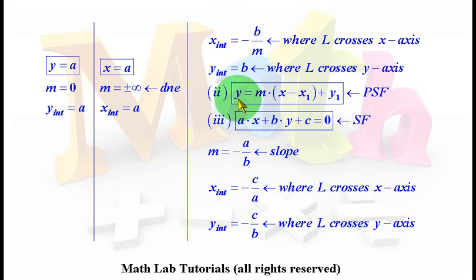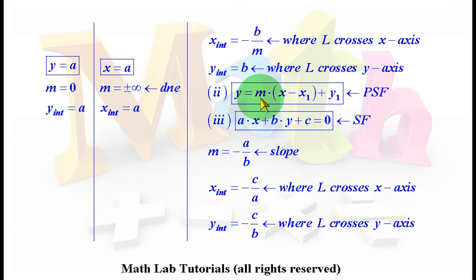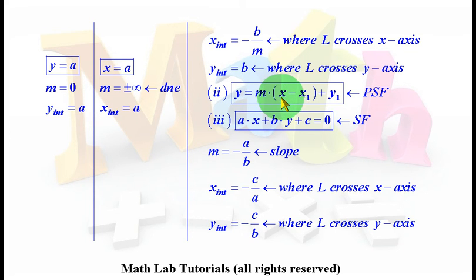There's another form for the equation of a line called point-slope form. It reads: y equals m times bracket (x minus x1) plus y1. Here m is the slope (y2 minus y1 over x2 minus x1), and the point x1, y1 is any point on the line. To verify: replace y by y1 and x by x1 — you get x1 minus x1 equals zero, m times zero is zero, and y1 equals y1. So this is an alternative form to y equals mx plus b, called point-slope form.